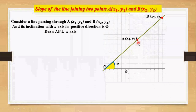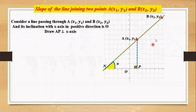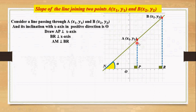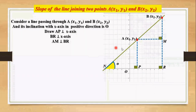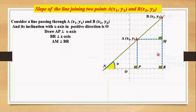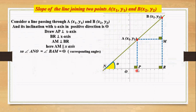Draw AM perpendicular to BR from point A. AM is parallel to the x-axis since both AM and the x-axis are perpendicular to BR. This gives a set of corresponding angles: angle ANO and angle BAM are equal. Since the inclination angle at the x-axis equals theta, its corresponding angle BAM also equals theta.